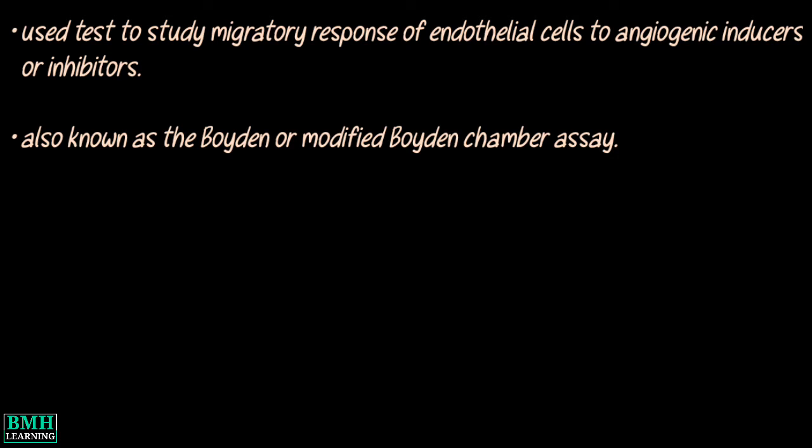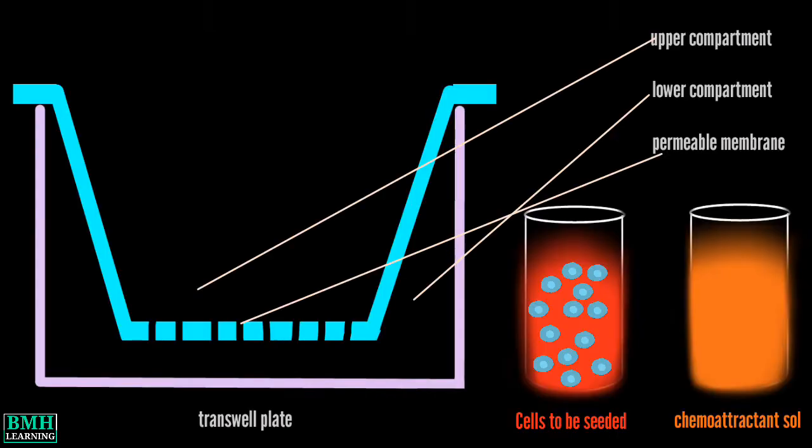This assay is also known as the Boyden or Modified Boyden Chamber Assay. The setup consists of an insert which separates the wells of a multi-well plate into top and bottom compartments.